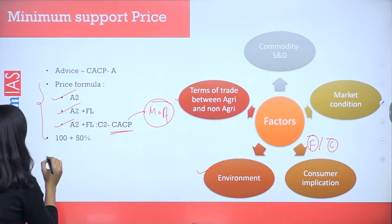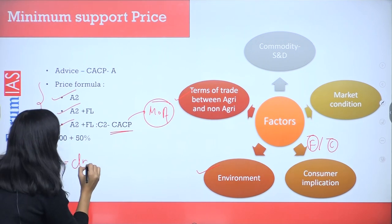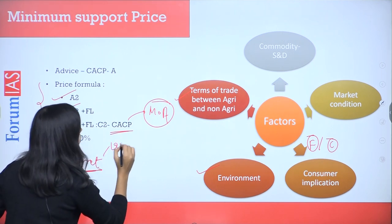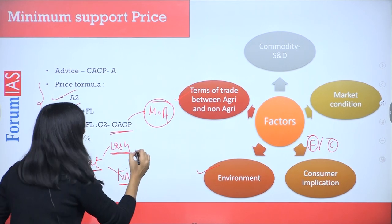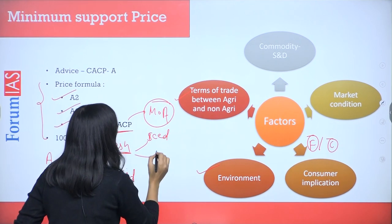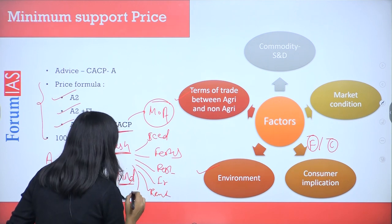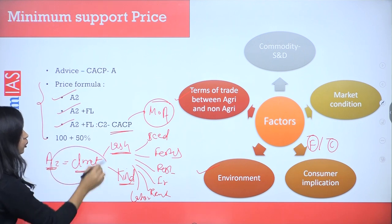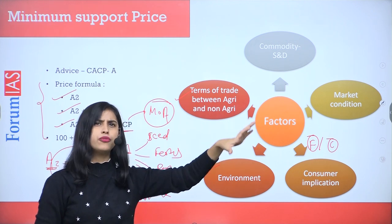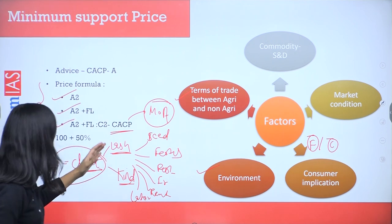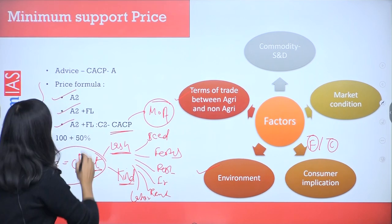The first formula is A2. It covers the overall direct cost incurred by the farmer — direct cost in cash or in kind. The farmer here is directly paying whether that is for seed, fertilizer, pesticide, irrigation, rent, or labor. Whether the payment is made in cash or in kind — such as using grain — any explicit payment made by the farmer is called A2. So initially MSP was calculated with the help of A2.